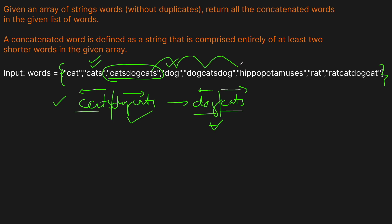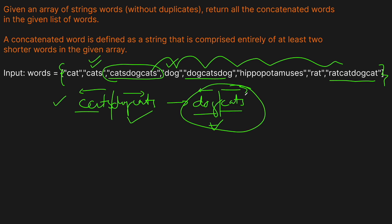And notice that we have some repetition — 'cats' comes up multiple times. So what we can actually do is use a memoization dictionary to store whether or not a word actually works, so we don't have to recompute it. What we want to do is basically the opposite of Word Break: instead of trying to break up the word, we're going to try to build it up. We're just going to use depth-first search with memoization — basically the exact same code as Word Break, except flipped. So let's go to the code editor and type this up.